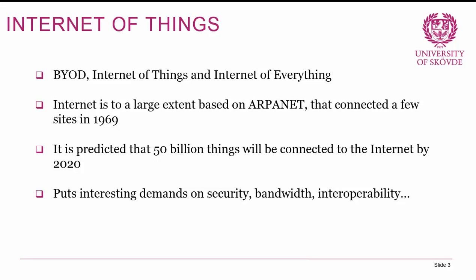We're connecting our fridges, I have my lamps at home connected, and I can control the engine heater of my car from my cell phone using the Internet. A fun story I heard: there was actually a denial of service attack that exploited a weakness in aquarium pumps to take over those pumps and use them in a denial of service attack — so even pumps for aquariums can now be connected. This evolution went from bring your own device, to Internet of Things, and now we really talk about the Internet of Everything, which puts interesting demands on security, bandwidth, interoperability, and performance.